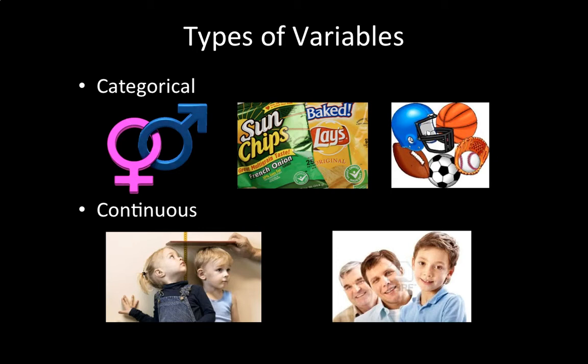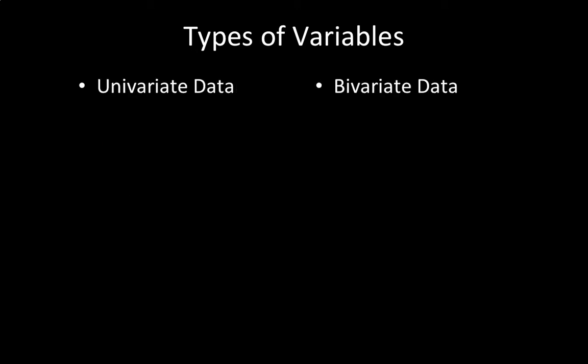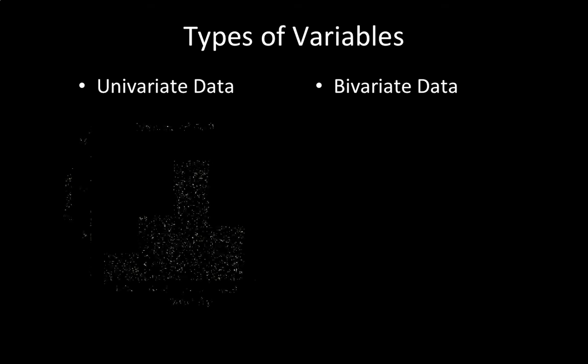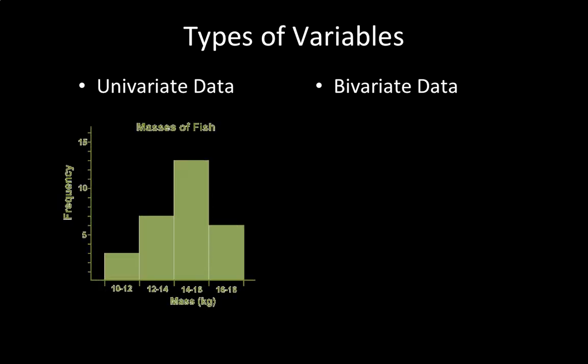So after collecting your data, you should now know if your data is categorical or continuous. If we only wanted to take one measurement from each object or subject, this would be called univariate data. An example of this is finding the mass of fish — you are finding only the mass, and that's the only measurement you are measuring.